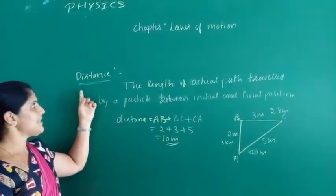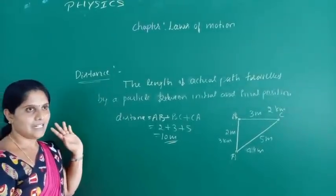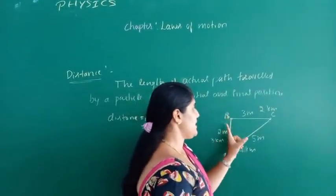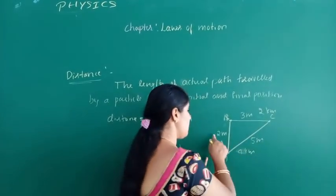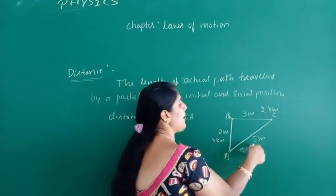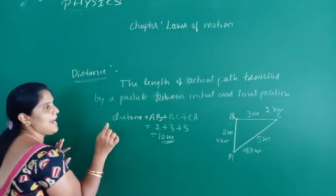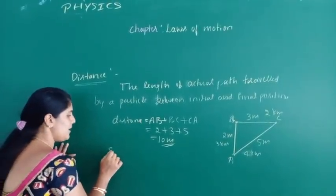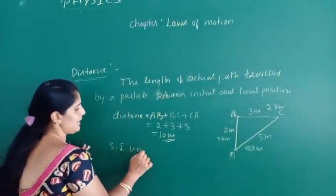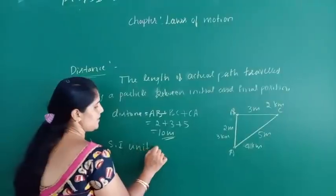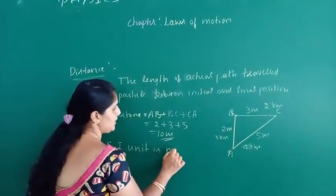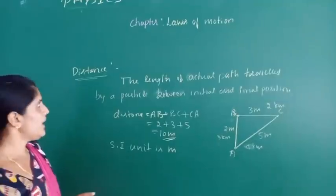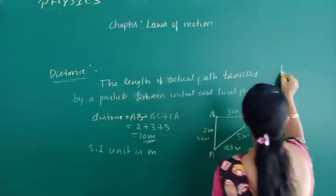Distance is a scalar quantity, so it has only magnitude and no direction. The SI unit of distance is meter.